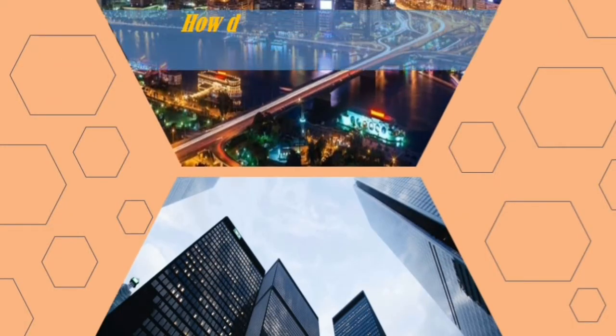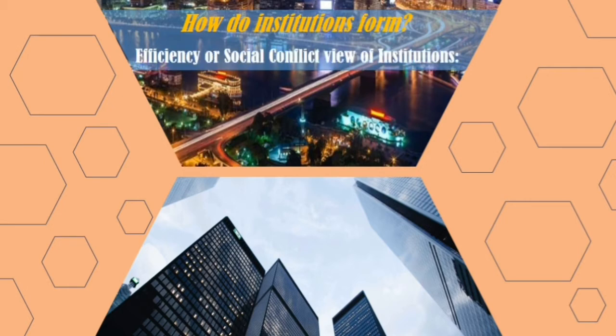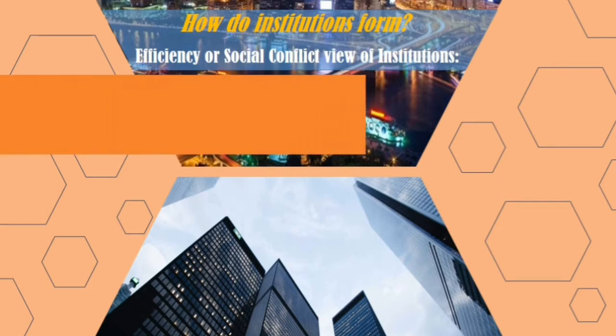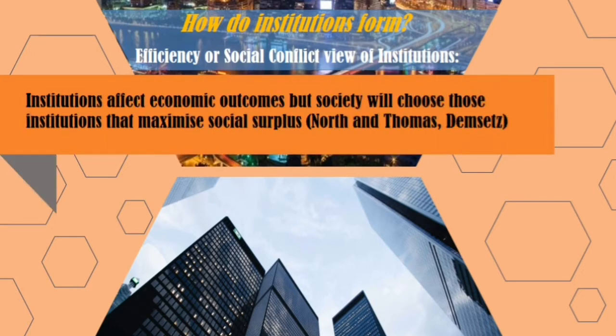The next question is how do institutions form, particularly as to the efficiency or social conflict view of institutions? First, institutions affect economic outcomes, but society will choose those institutions that maximize social surplus — speaking of both formal and informal institutions. When we say maximize social surplus, we mean the benefits that the society may receive out of these outcomes.